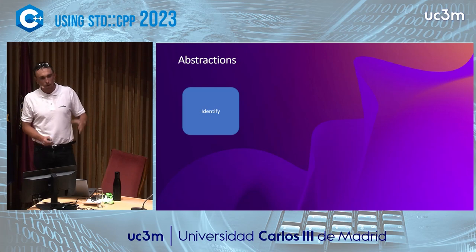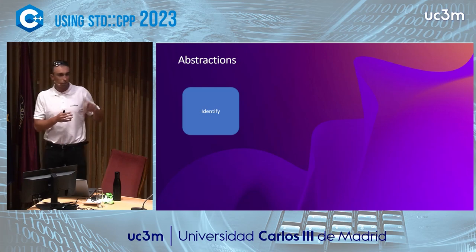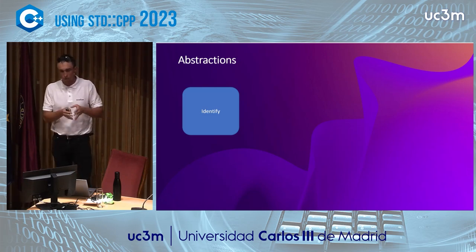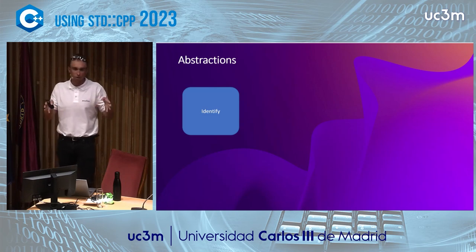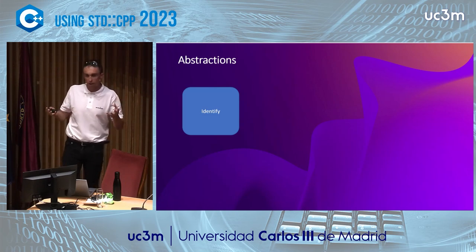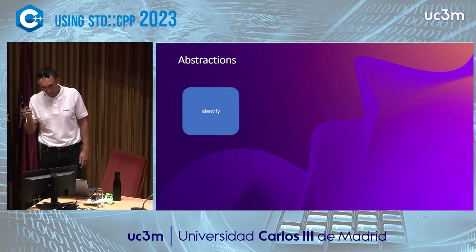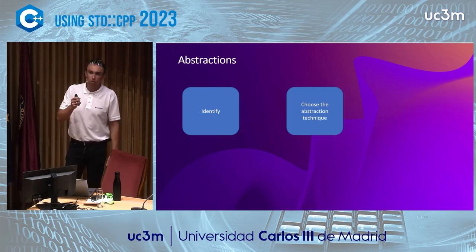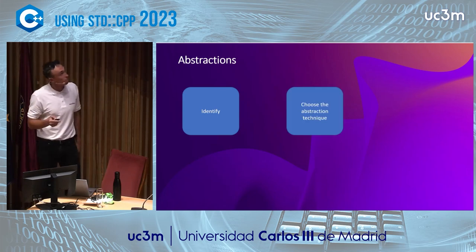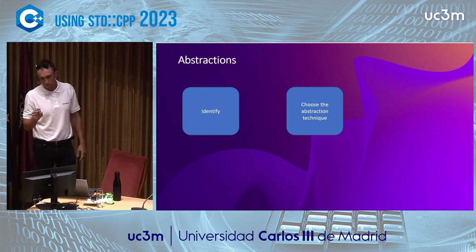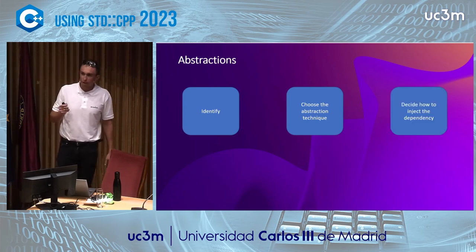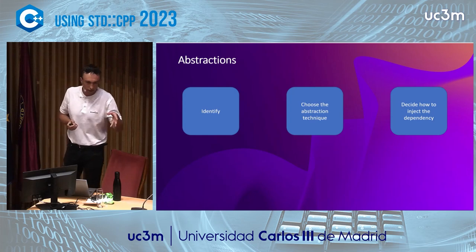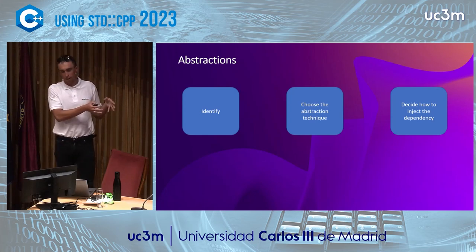When coupling software components we can partition into three phases. First, we identify how we want to partition our code and find dependencies and connections between them. Next, we choose the proper abstraction technique. Finally, we decide how to inject the dependency instance, which will be accessed through an abstraction layer from another component.